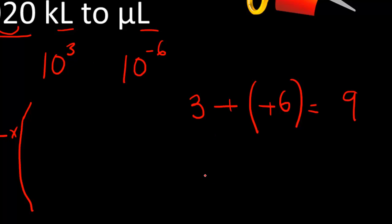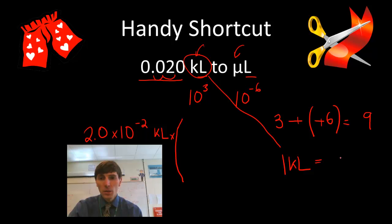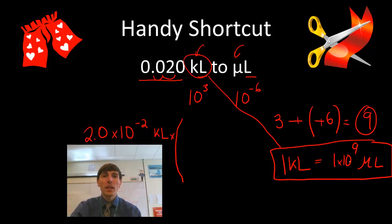So what I can do is I can say 1 kiloliter, put a 1 next to the first unit, is equal to 1 times 10 to the 9th microliters. So what I've done is I've taken those powers of 10, and I've just made a conversion factor.